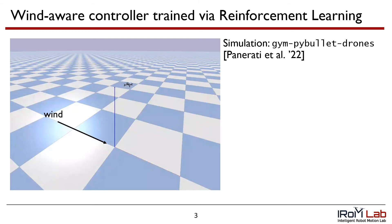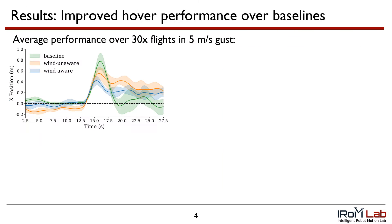We train our wind-aware controller using reinforcement learning in the Jim PyBullet drone simulator with simulated wind and aerodynamic drag. Over 30 flights on the FlowDrone platform, we demonstrate the stronger performance of our wind-aware controller, shown in blue, over two wind-unaware baselines.